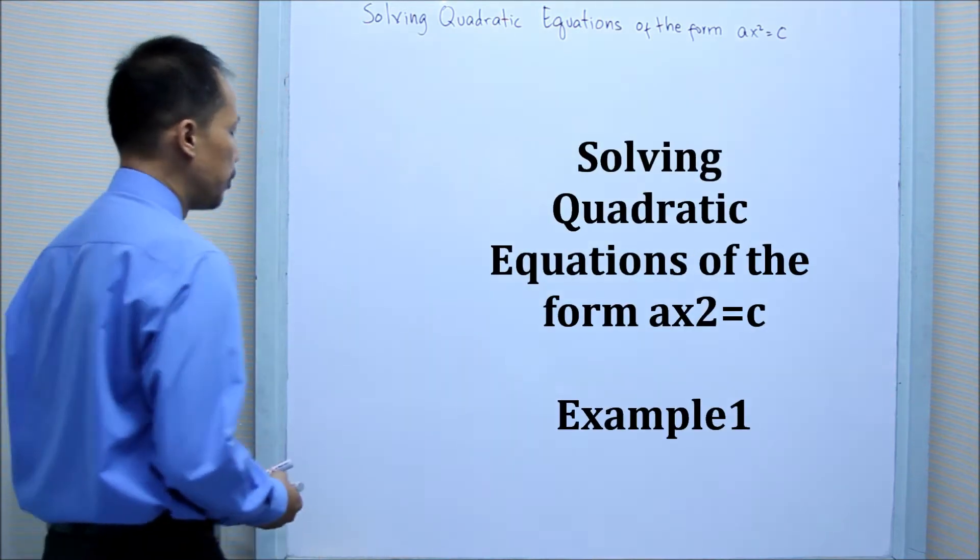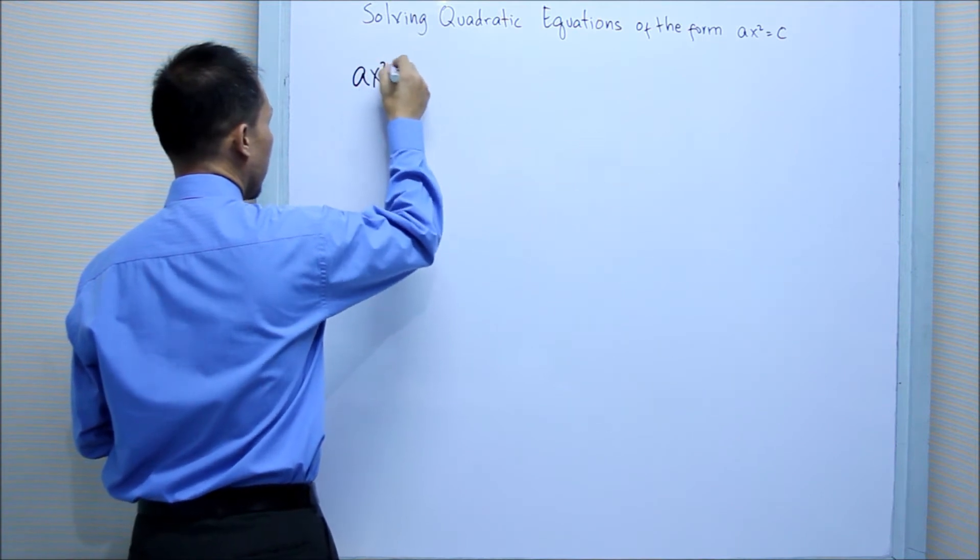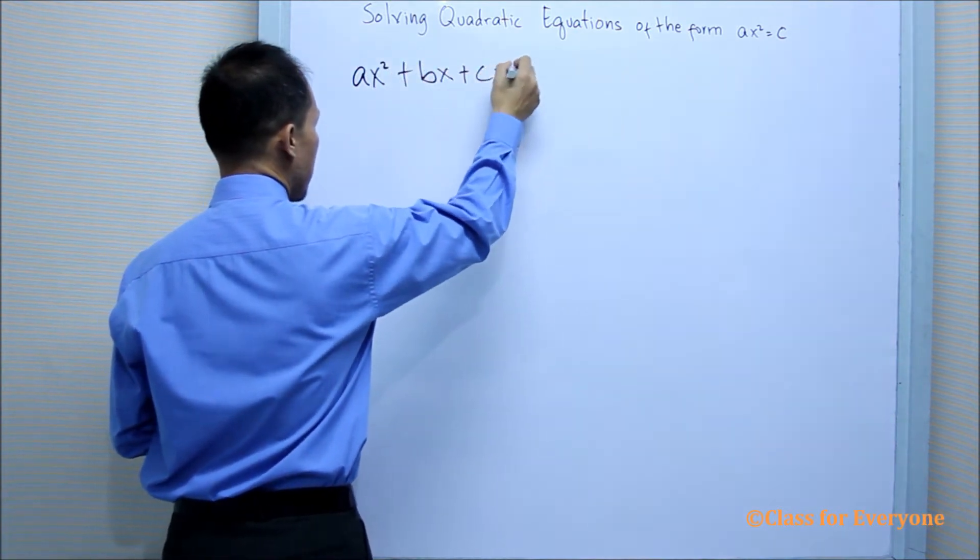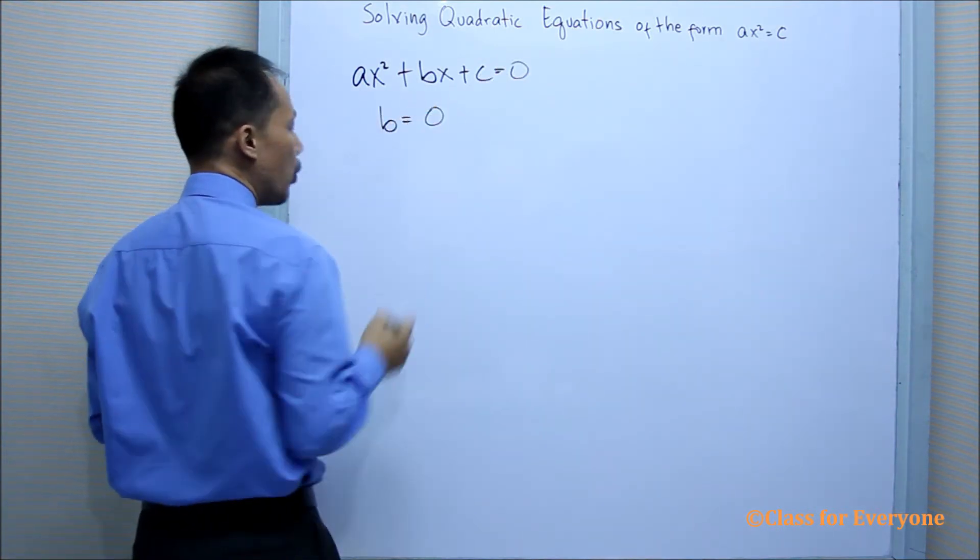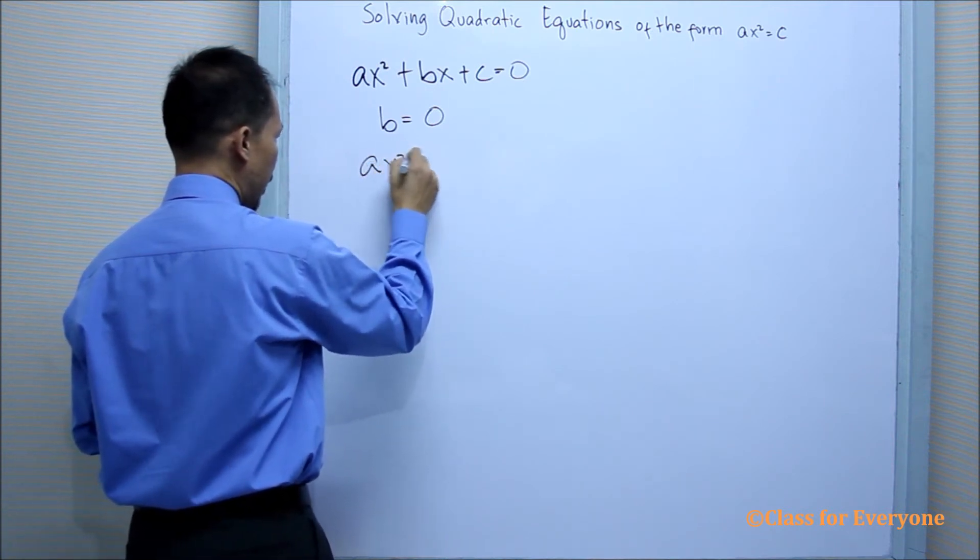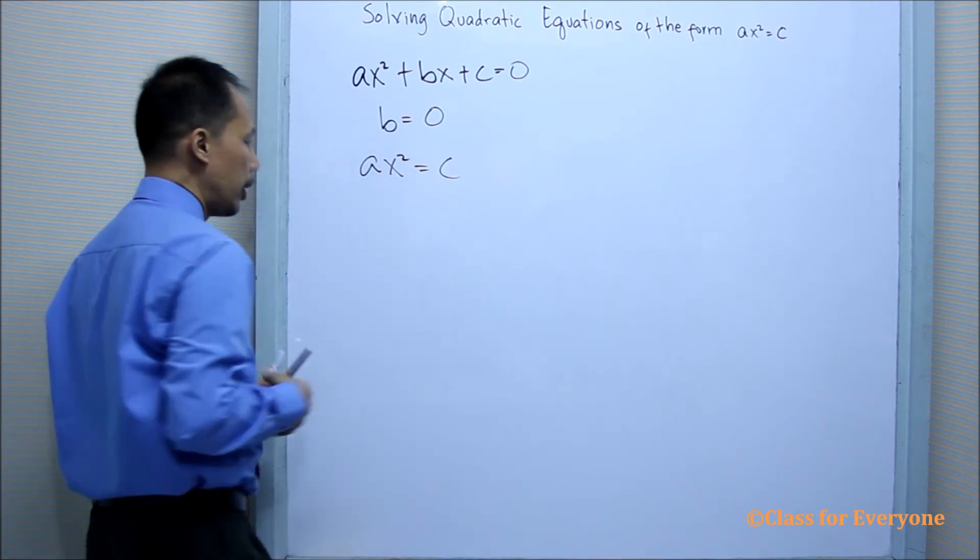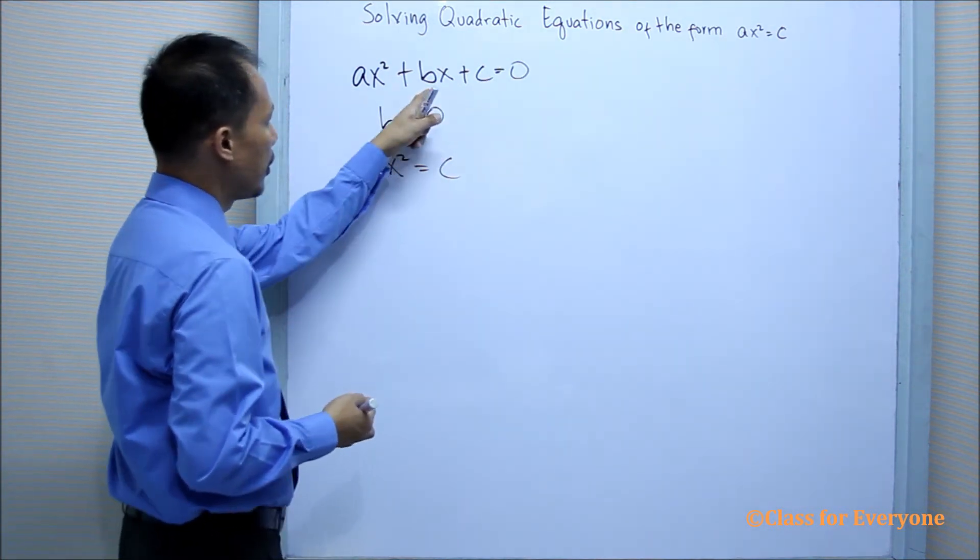The general form of the quadratic equation ax² + bx + c = 0, where b is equal to 0, can take the form ax² = c. This quadratic equation is called incomplete because the linear term is missing.